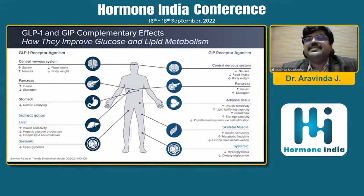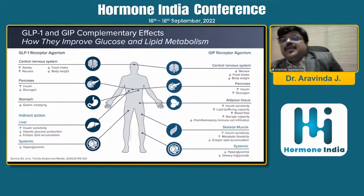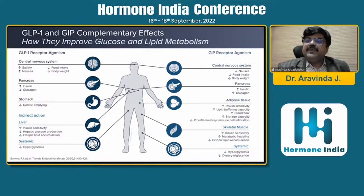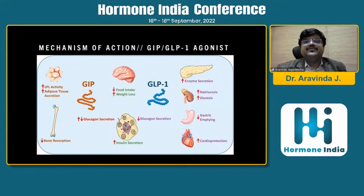On the right-hand side, you can see the GIP receptor agonist. This is one new concept — where GLP-1 causes nausea, GIP actually decreases nausea and decreases food intake and body weight. In the pancreas, GIP increases both insulin and glucagon. In adipose tissue, it increases insulin sensitivity, lipid buffering capacity, blood flow, and storage capacity, decreases pro-inflammatory immune cell infiltration, increases metabolic flexibility, and decreases ectopic lipid accumulation, ultimately decreasing hyperglycemia and triglycerides.